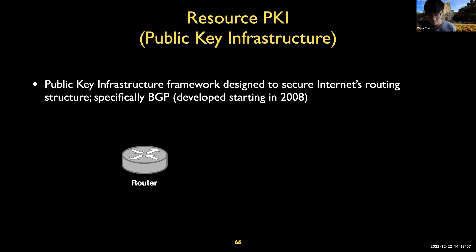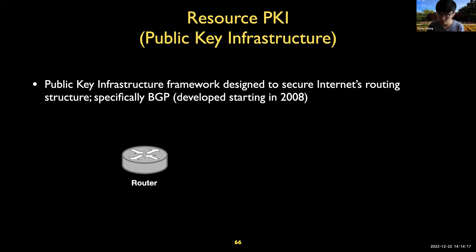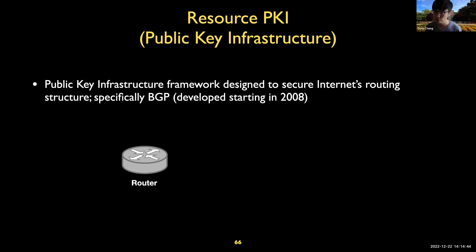Let me briefly recap what we have covered in the routing session. First, I walked you through how routing works, how intra and interdomain routing protocols work, how BGP works, and what kinds of security problems exist in BGP protocols. Lastly, I walked you through the new routing security protocol called RPKI, that solves the major security challenges of routing protocol. I also showed you some examples of routing attacks such as BGP prefix hijacking and AS prepending attack.